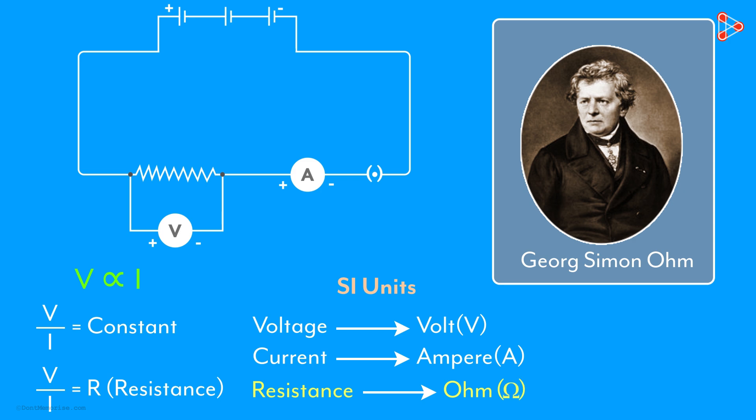If the potential difference across two ends of a conductor is 1 volt, and the current through it is 1 ampere, then the resistance of the conductor will be 1 Ohm.